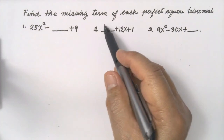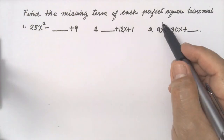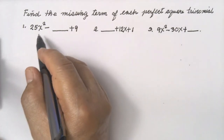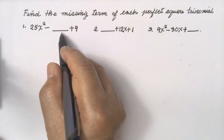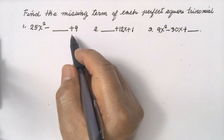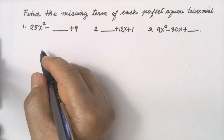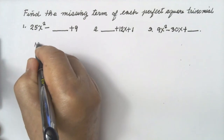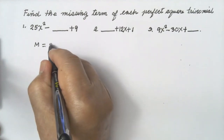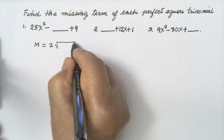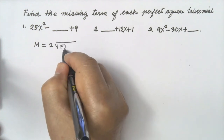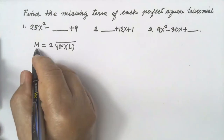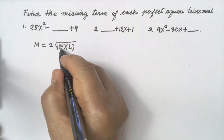Find the missing term of perfect square trinomials. Number one: 25x² minus the missing middle term plus 9. The formula is easy to use and remember: m is equal to 2 times the square root of the first term times the last term. Here, m means middle term, f means first term, and l means last term.